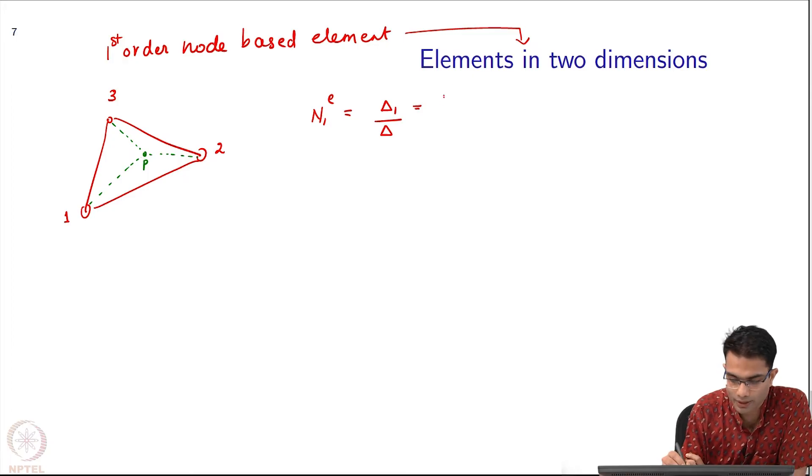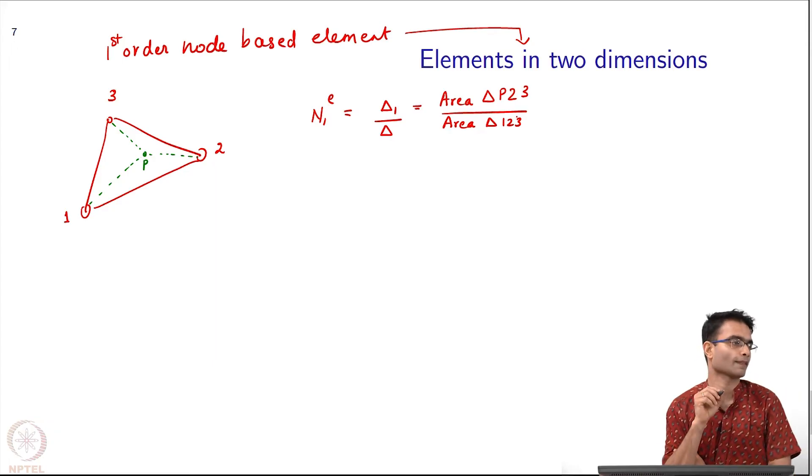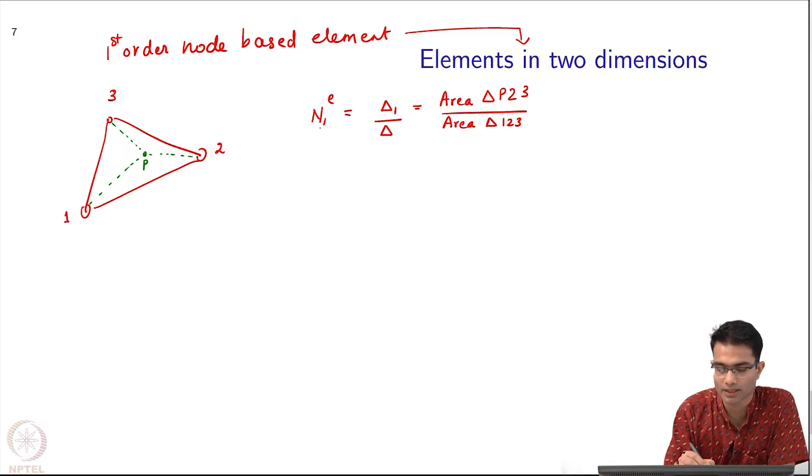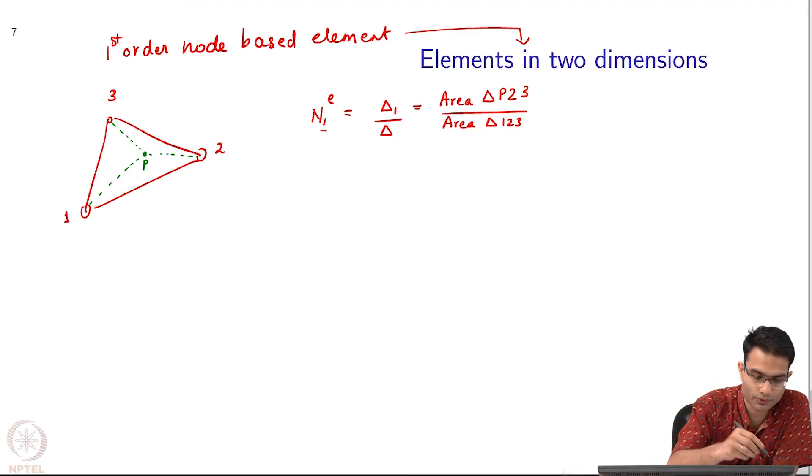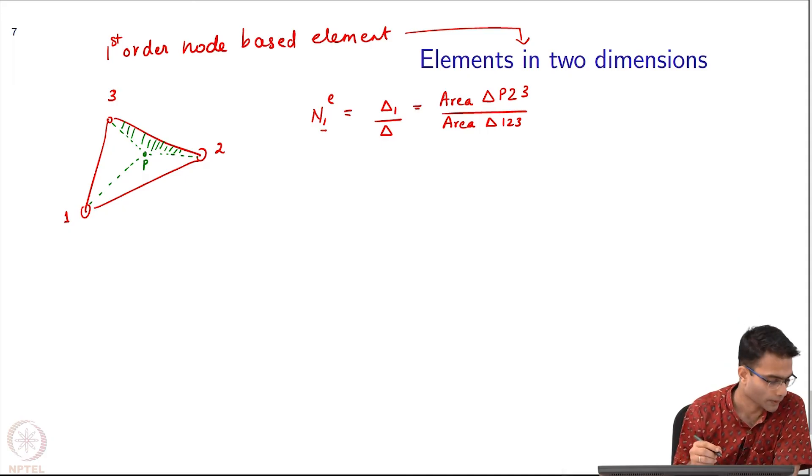Let us connect this hypothetical point to the 3 nodes - this is my point P. Now I define my first shape function as the area of triangle 1. What is triangle 1? It is the area of triangle P23 divided by area of triangle 123. That is the definition. That is why you notice that it is N1 - I exclude 1 and therefore it is the area of P23. That means this area.